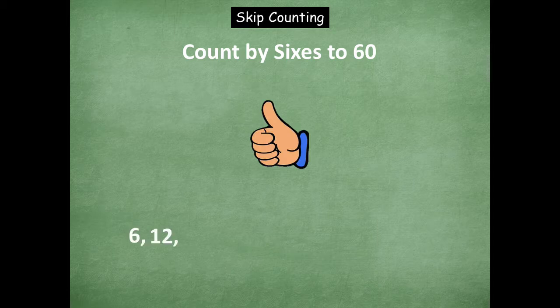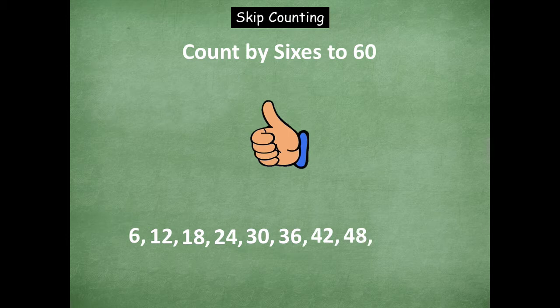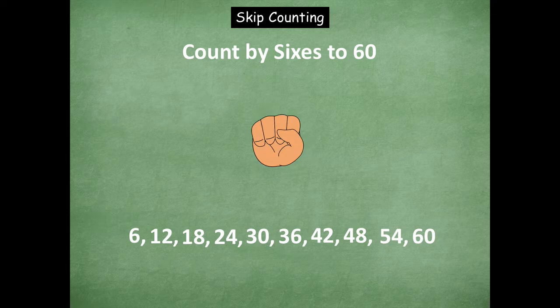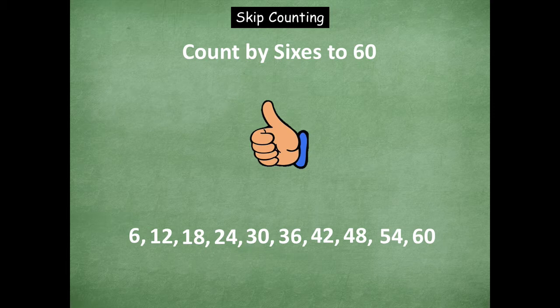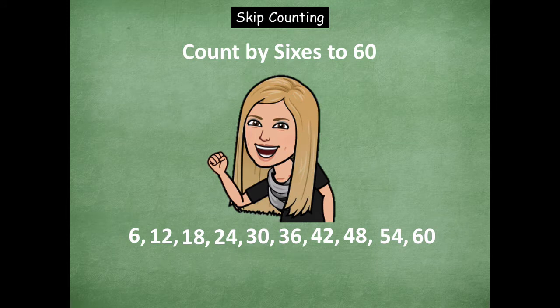We're counting up: six, 12, 18, 24, 30, 36, 42, 48, 54, and 60 — stop. Now we're going to go up from 18: 18, 24, 30, 36, 42, 48, 54, 60. Rock on! Awesome job with that one, friends.